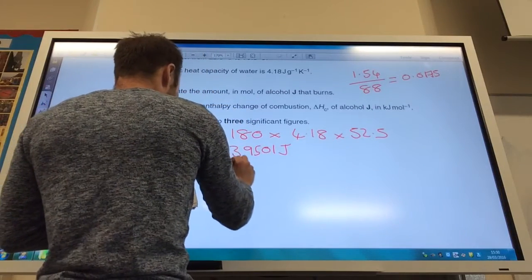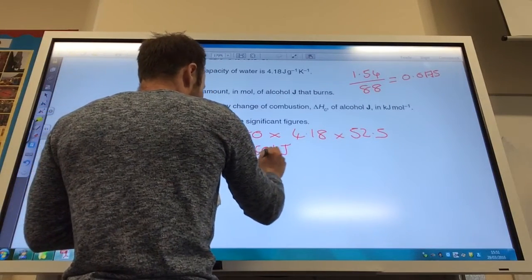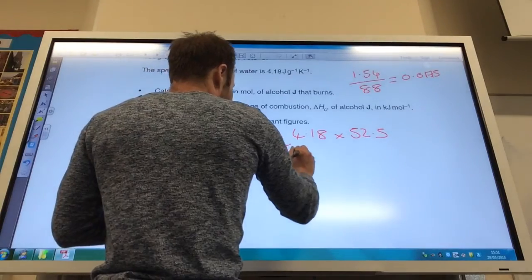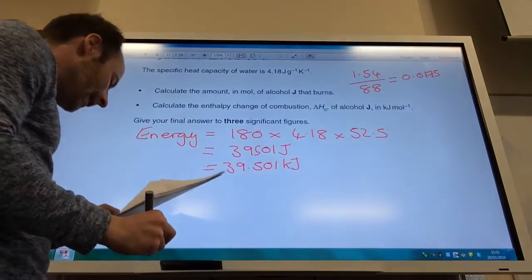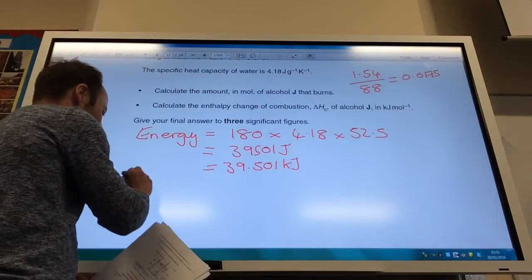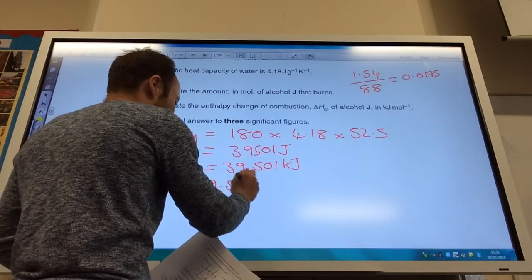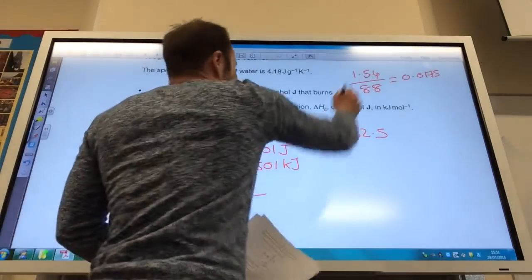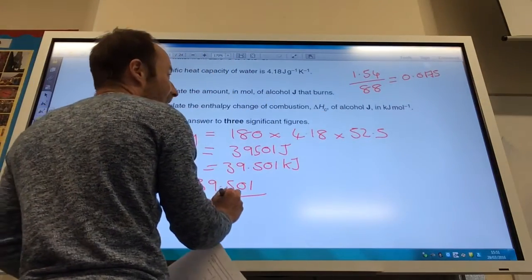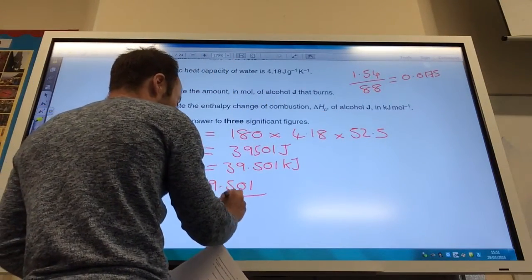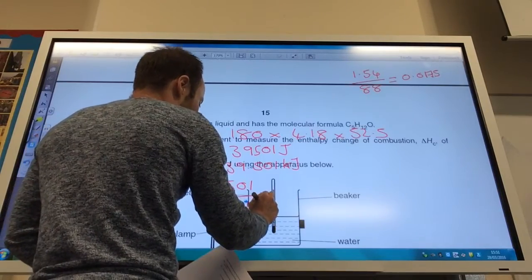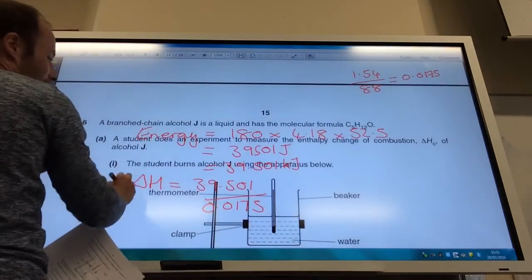And that comes to 39.501 kilojoules. To calculate delta H, it's going to be that number, 39.501, divided by the moles of alcohol, because this gives me it in kilojoules per mole.